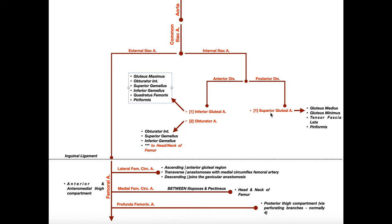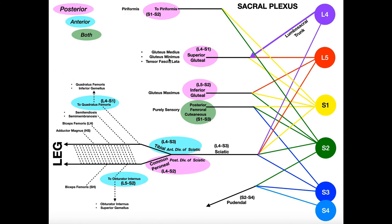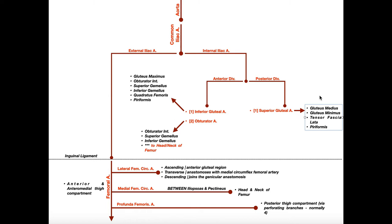Over here we have the posterior division. The one major branch of the posterior division that supplies muscles is the superior gluteal artery. From the sacral plexus, the superior gluteal nerve innervates gluteus medius, gluteus minimus, and the tensor fasciae latae, so it should be no surprise that the superior gluteal artery supplies blood to those same three muscles plus the piriformis. Notice the piriformis is supplied by both the superior and inferior gluteal arteries — more overlap. The other arteries of these divisions are mostly supplying structures within the pelvic cavity, which we're not discussing here.